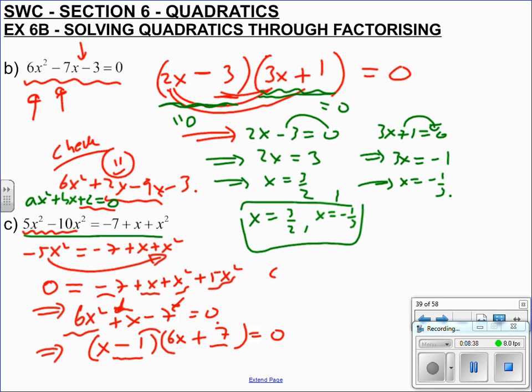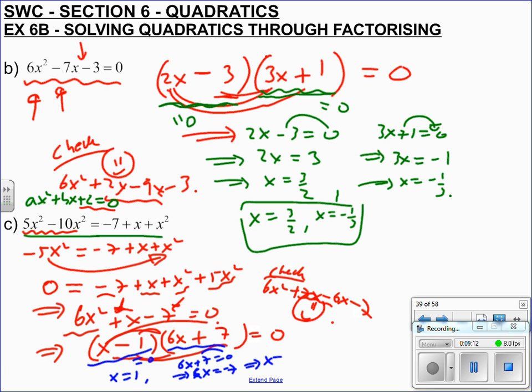So we'll check it. Definitely don't walk away without checking it. So x times 6x is 6x squared, x times 7 is plus 7x, minus 1 times that is minus 6x, and minus 1 times that is minus 7. So 7x takes 6x is x, so we're happy. So it does work. So like before, either this bracket is 0, so therefore x is 1, or this one is 0. So 6x plus 7 is 0, and therefore if you move the minus 7 over, you get 6x is minus 7, and then you'd need to divide it by 6.